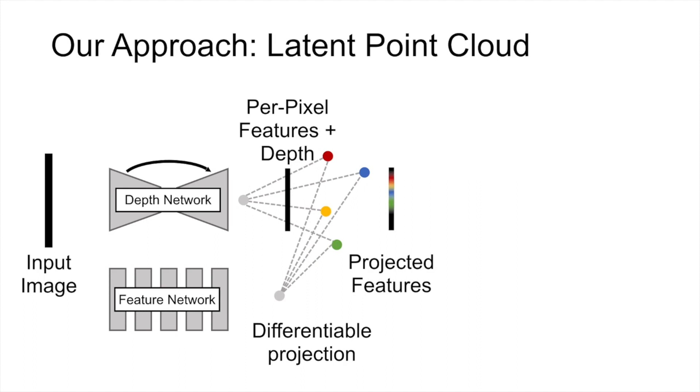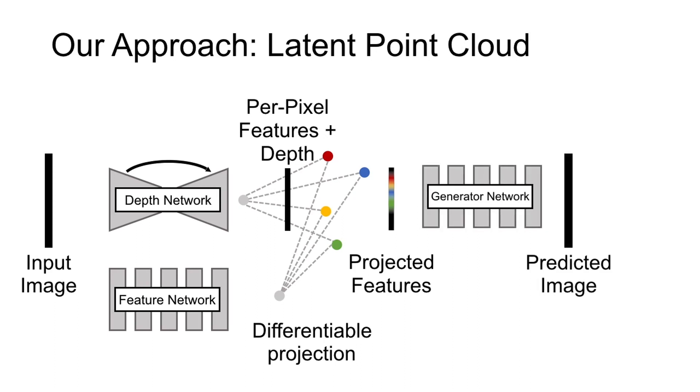But it will have some holes and potentially artifacts from where the point cloud does not project. For example, regions in a new image that are not visible in the original one should not have projected features. In order to fix this, we use our generator network, which is based on GAN models, in order to fill in the missing regions.